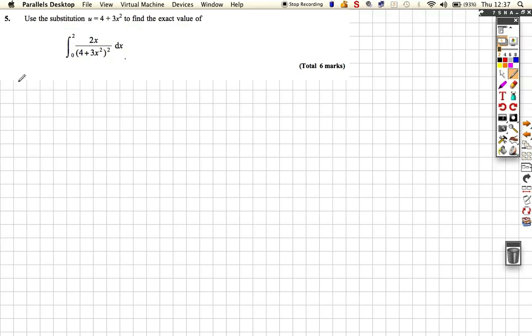Well, let's get our expression written down. So the x limits run from 0 to 2, and the expression is 2x all over 4 plus 3x squared, all squared, with respect to x.